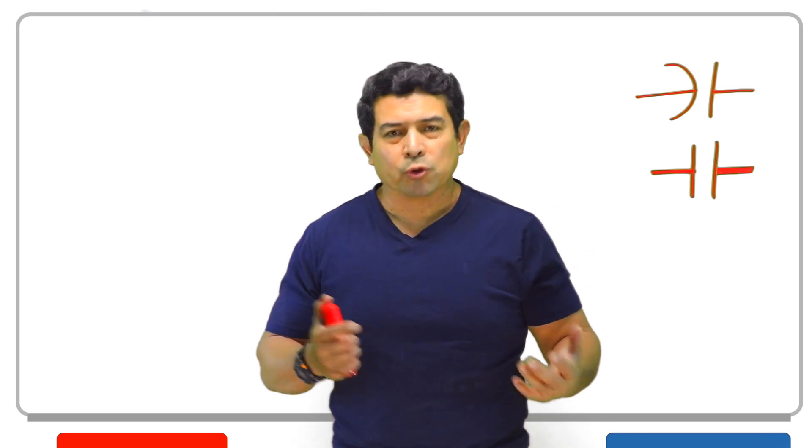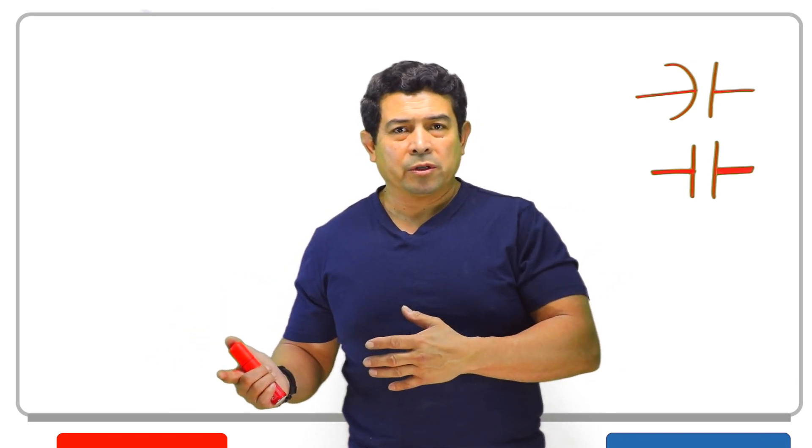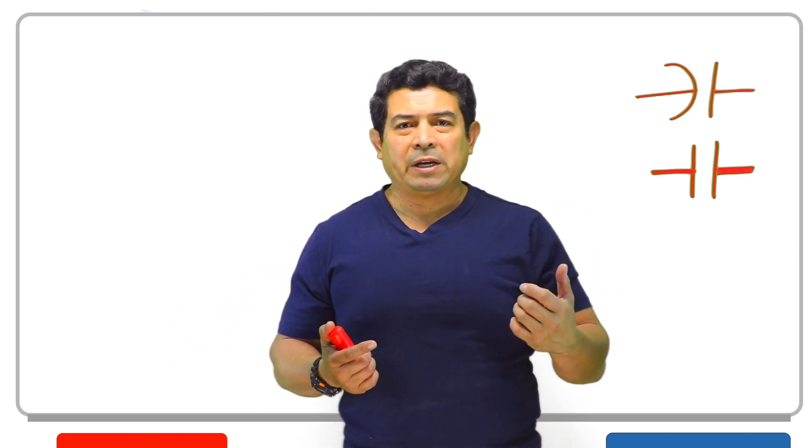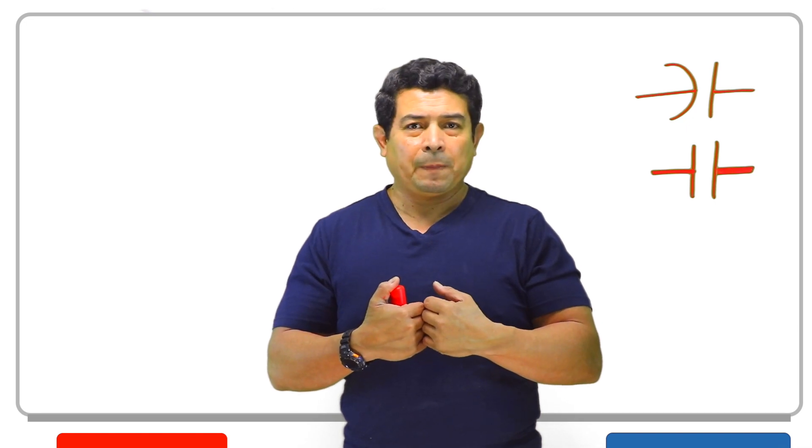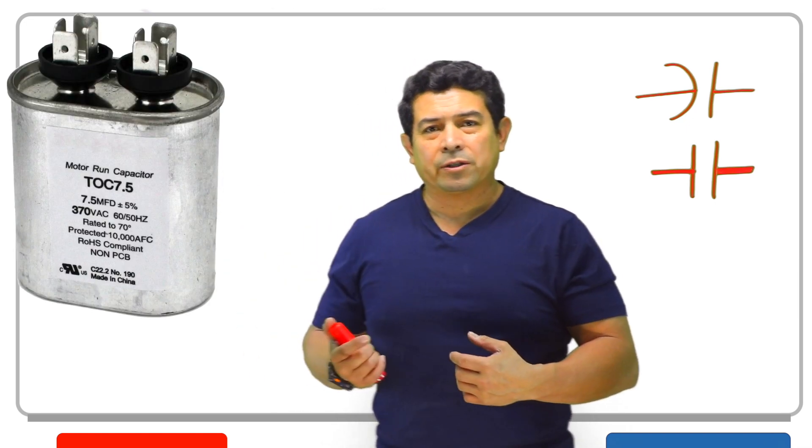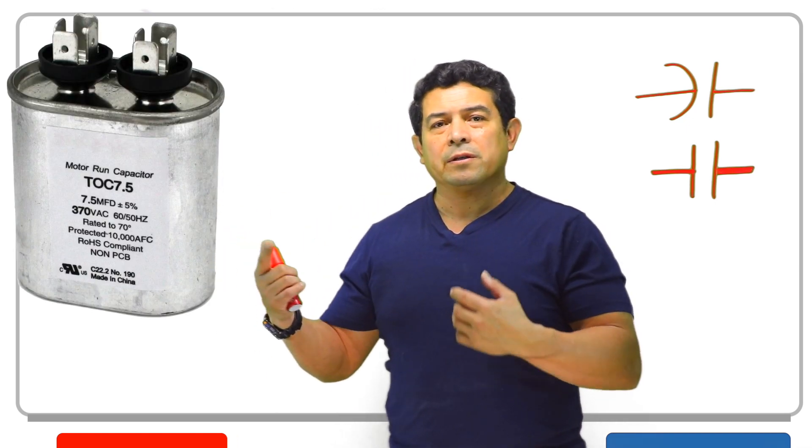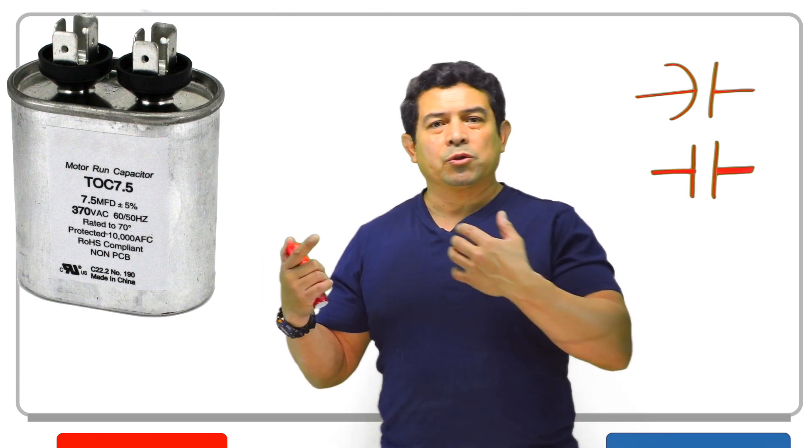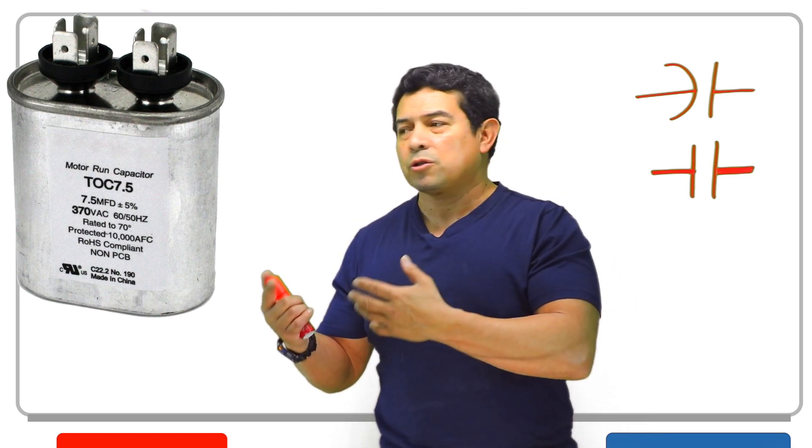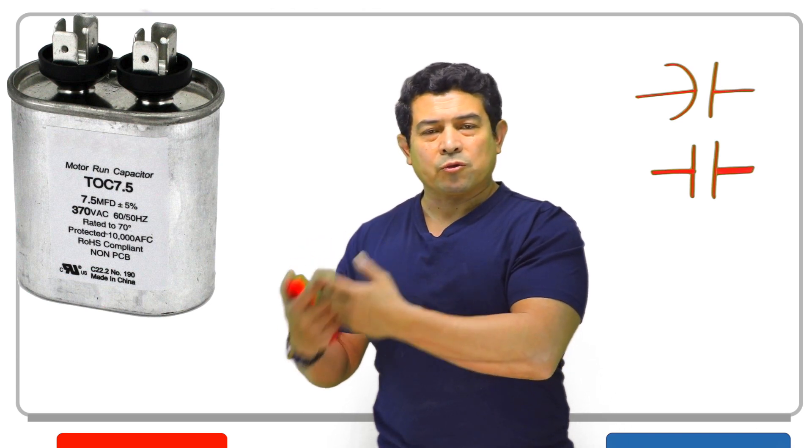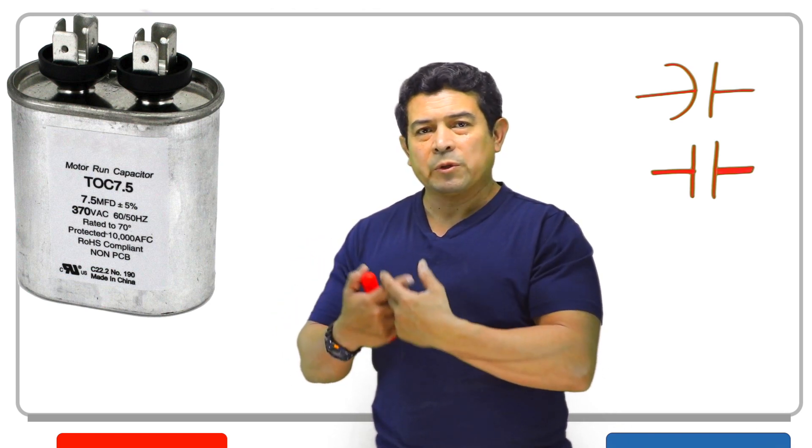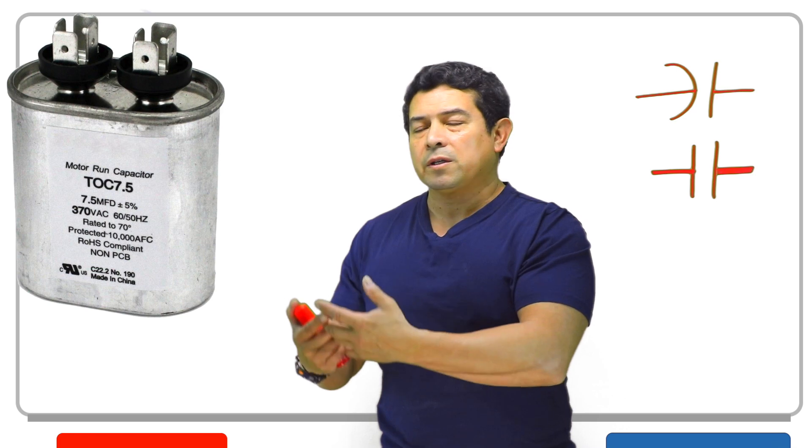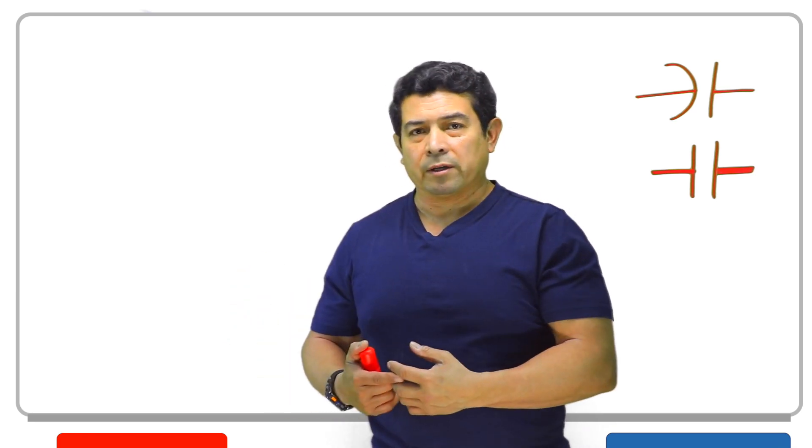Now, the capacitors are used mostly on motors, and we have two different types. One is going to be the run capacitor. The run capacitor is going to be used on motors and compressors when the motor or compressor is running. So the name is going to tell you what they do.